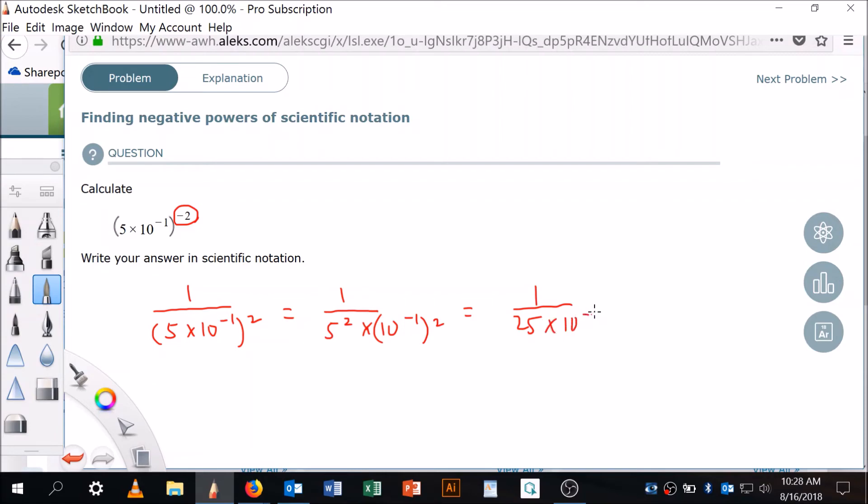Here we multiply, so this is going to be times ten to the minus two. You see that? So now this becomes the same thing as one over 25 times one over ten to the minus two.